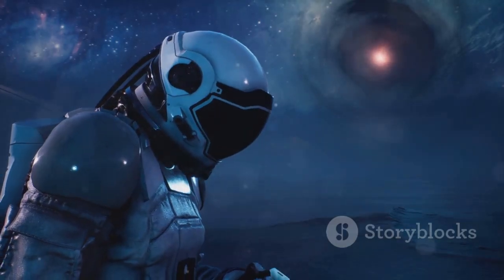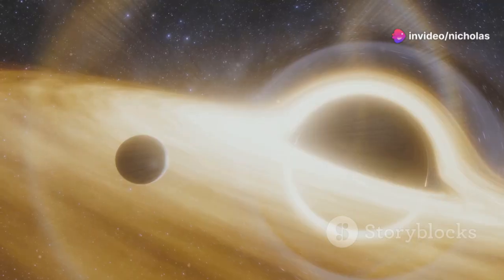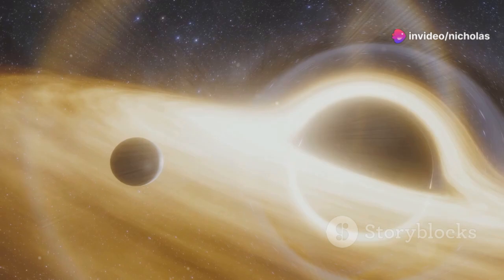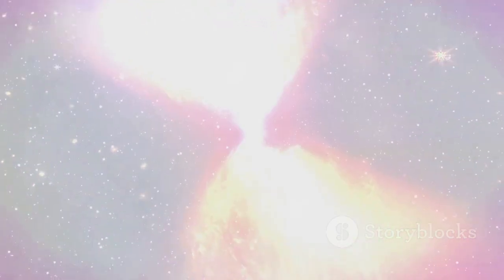This is why we can't see black holes directly. No light escapes from them to reach our telescopes. But don't worry, we have other ways of detecting these elusive beasts, as you'll soon discover. So, how do black holes form? Well, it all starts with the death of a massive star.